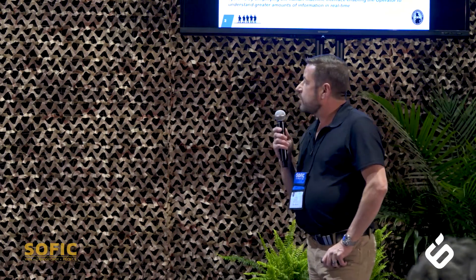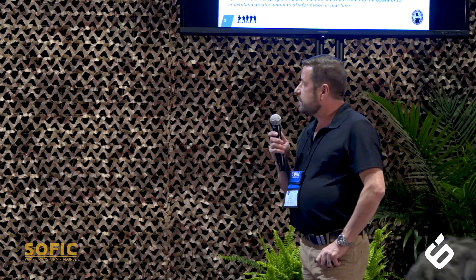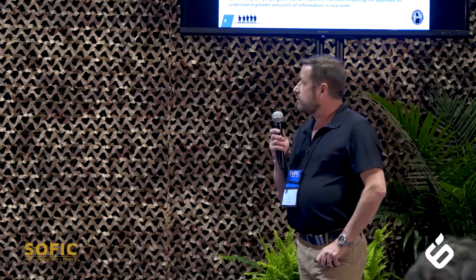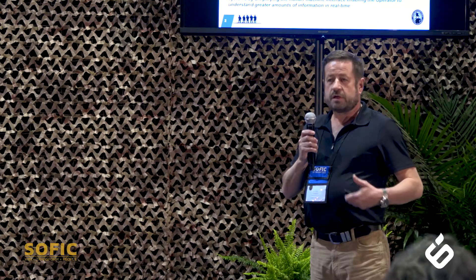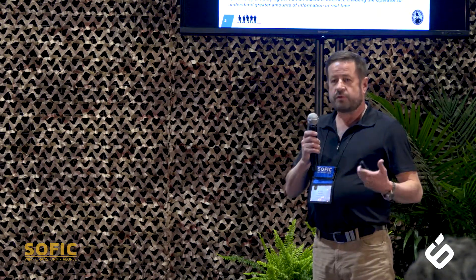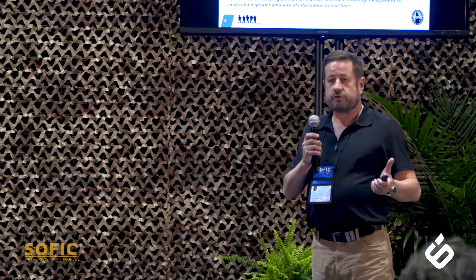We've worked with different radios — Harris, Trellisware Persistent, and also some of the legacy radio types such as Kodan, Motorola, and Hytera, which are a critical capability when working with coalition partners or indigenous forces that don't tend to have Harris radios, whether due to ITAR or other issues. We can provide a system that works with their existing radios through what we call Ronin Connect, part of the Ronin SA suite, which is software specifically designed for different types of radios.